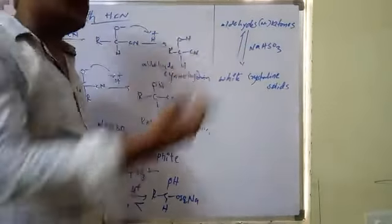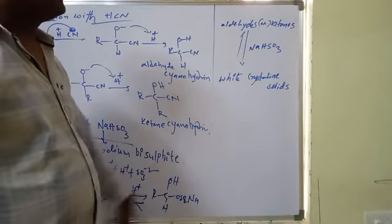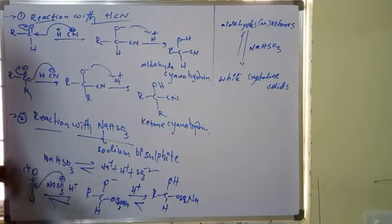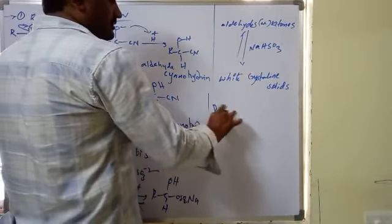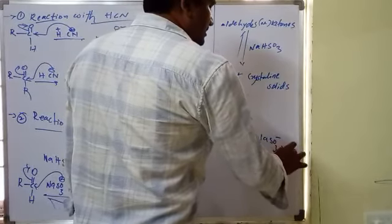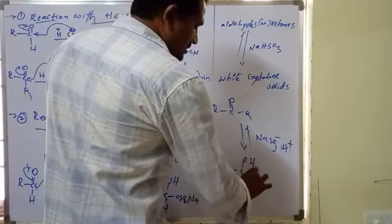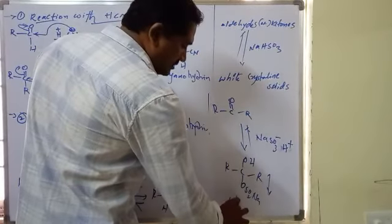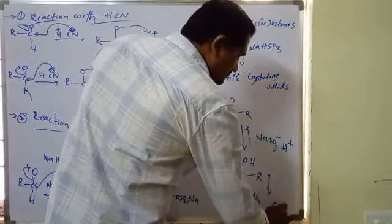This reaction with sodium bisulphite is a distinguishing test for carbonyl compounds versus non-carbonyl compounds. Both aldehydes and ketones react with sodium bisulphite to form white crystalline solids, which is the key observation.